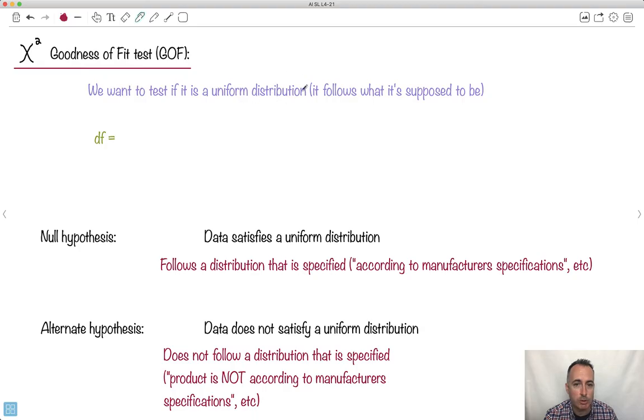What we do is we want to test if it's a uniform distribution, or I like to say it follows what it's supposed to be. We're going to have something with degrees of freedom, this is worth memorizing. It just goes n minus 1, where n is your number of entries. So we're going to have lists now. It's not going to be a matrix anymore, it's going to be a list. This right here you should memorize, especially for goodness of fit.